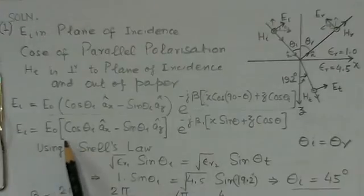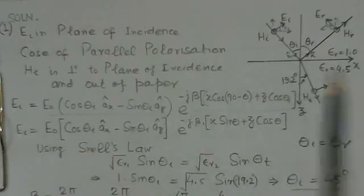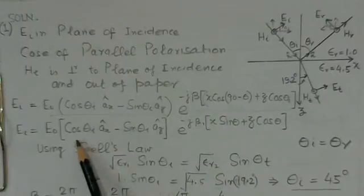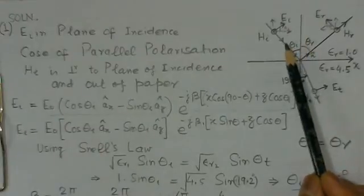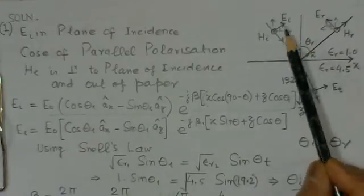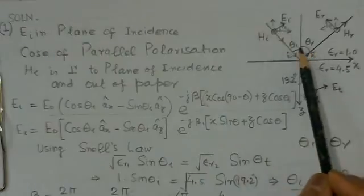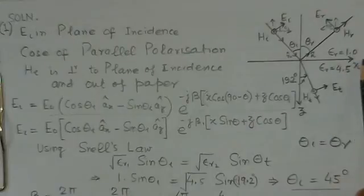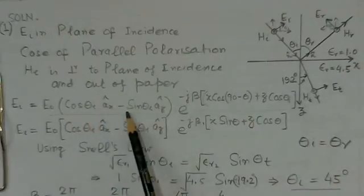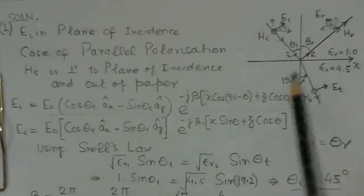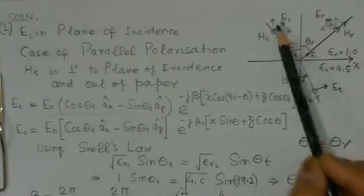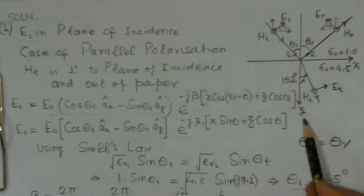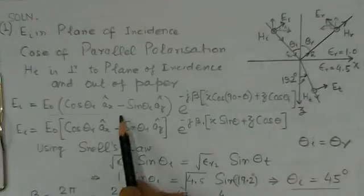You can see here that the component of E_I, this is E_I, this is angle θ_i. So cos θ_i is in the positive x direction, so cos θ_i A_x. And then the z component, which is also in the plane of incidence, this will come to be sin θ_i A_z. Because since it is in the negative direction, so it is negative sign.